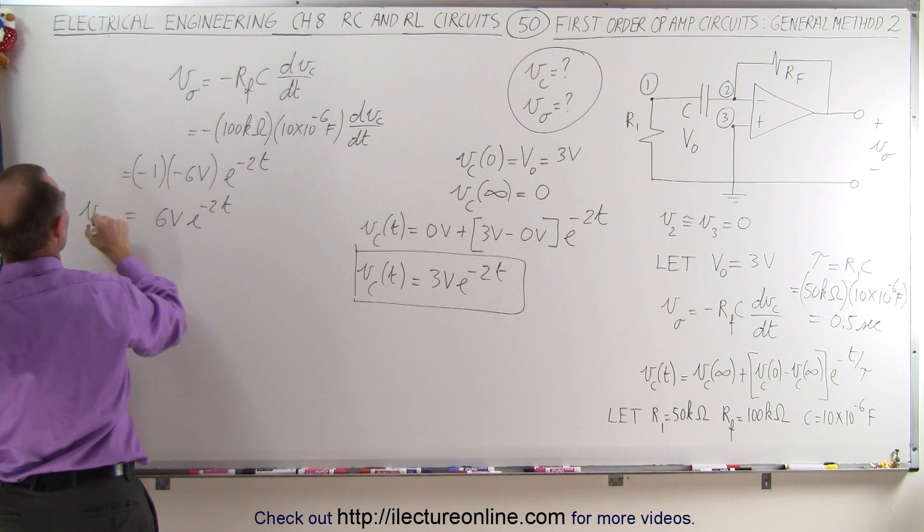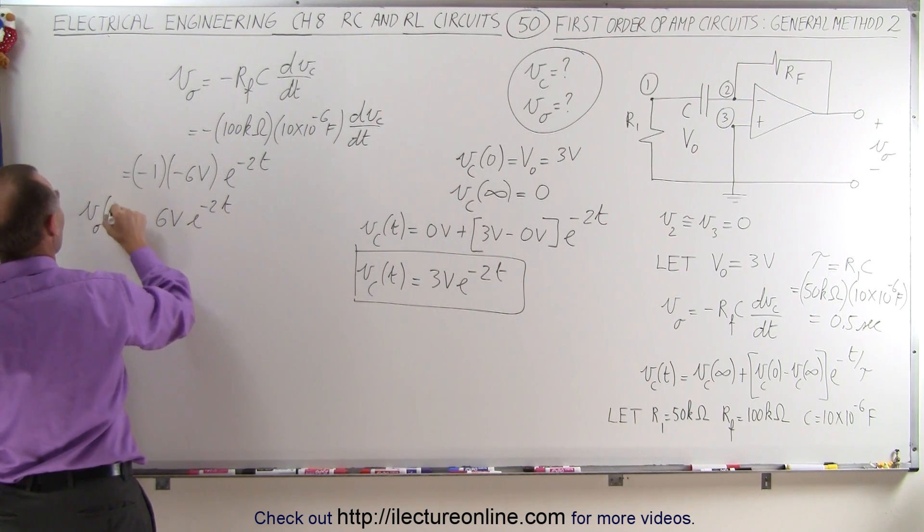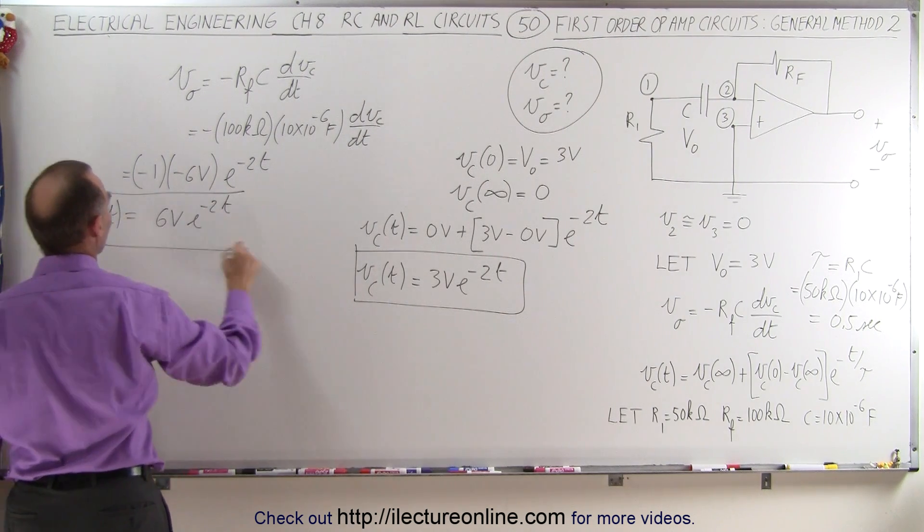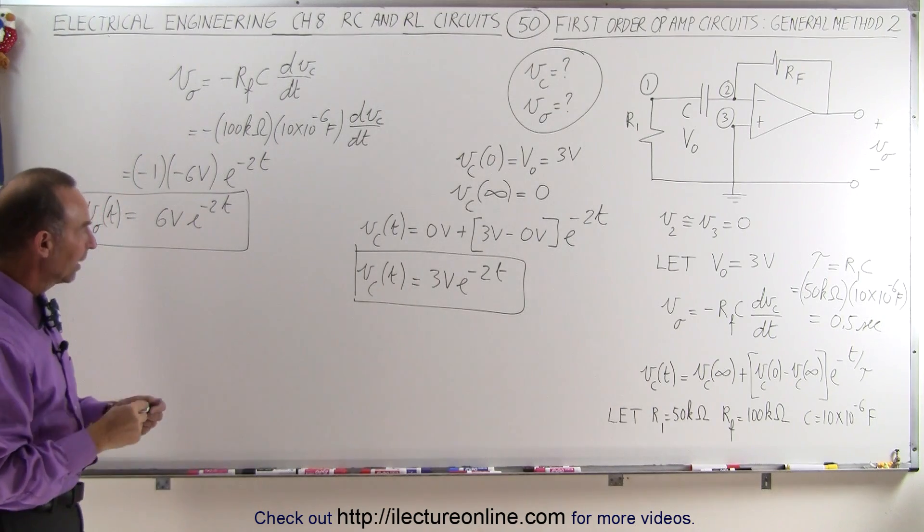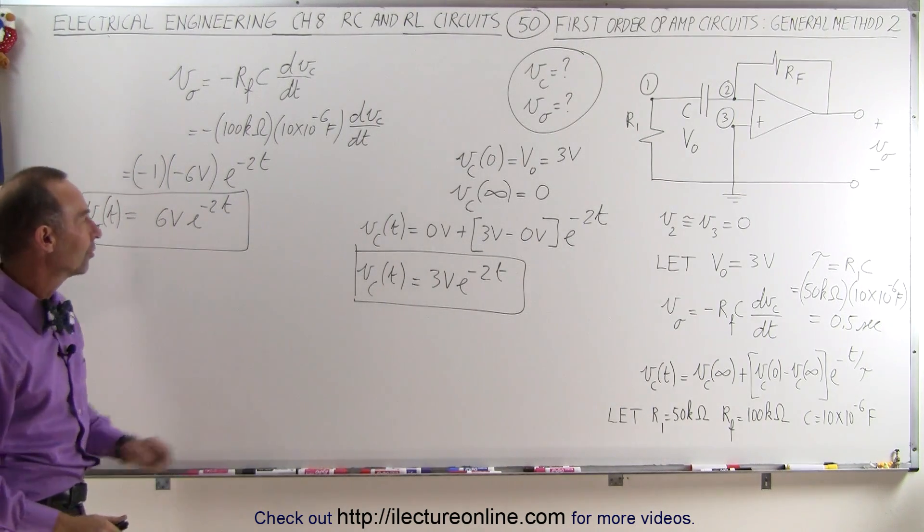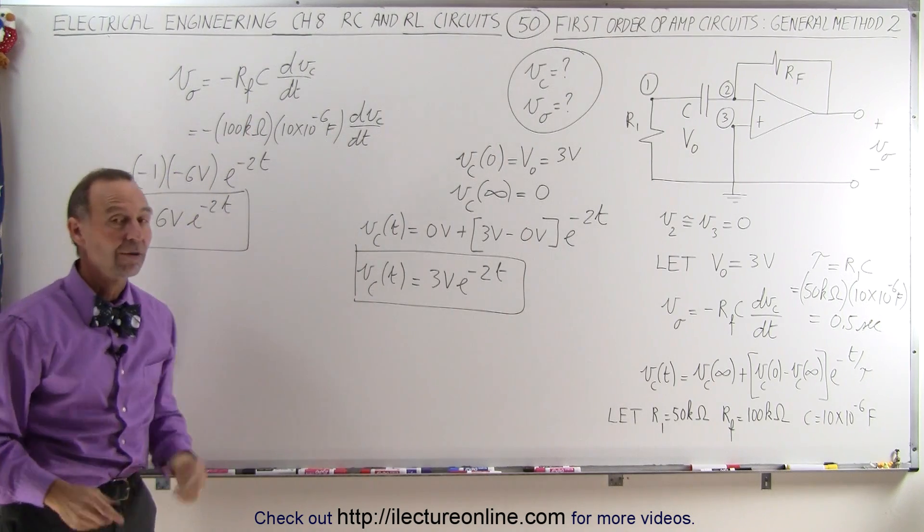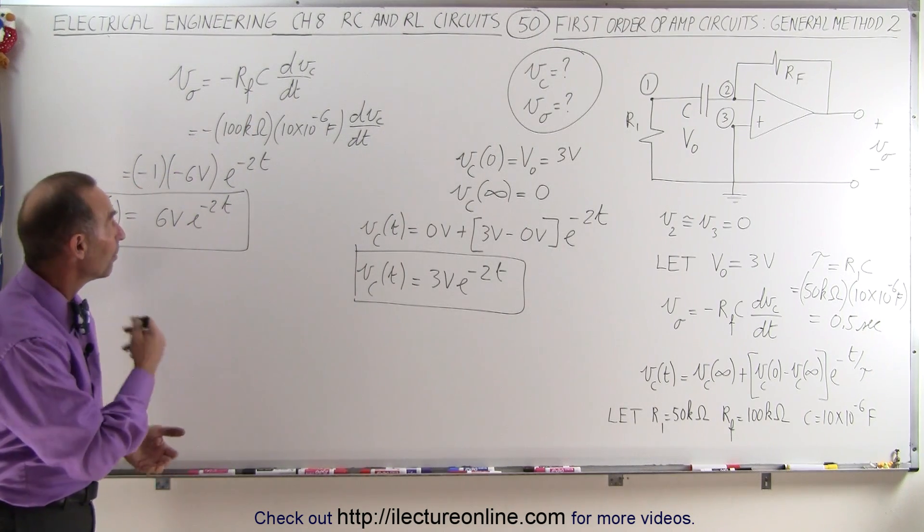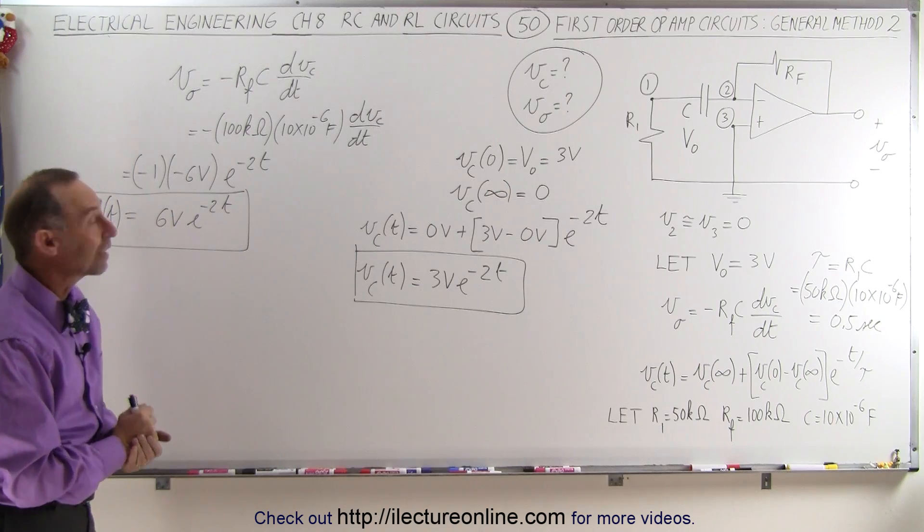Which is the output voltage as a function of time of this particular circuit. And so here we have the voltage across the capacitor and the output voltage simply by taking the derivative of the voltage across the capacitor and multiplying times negative Rf times C. And that's how it's done.